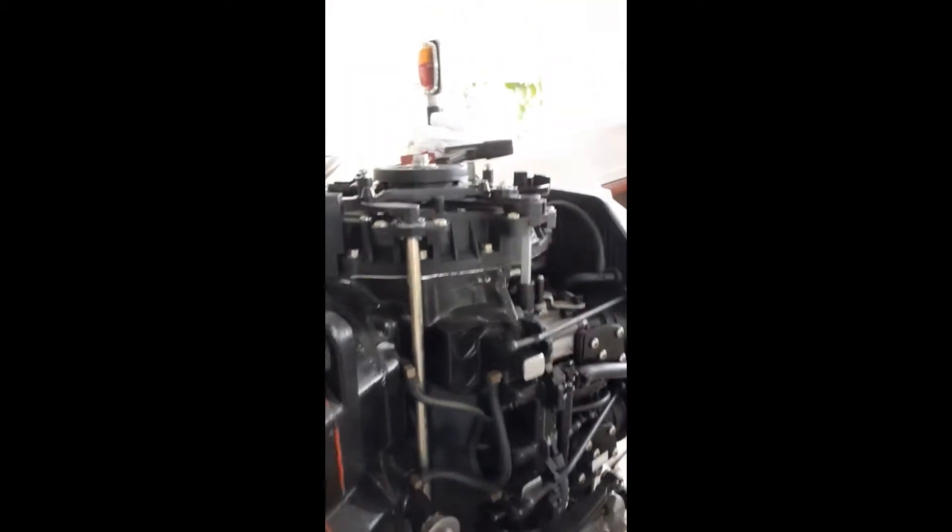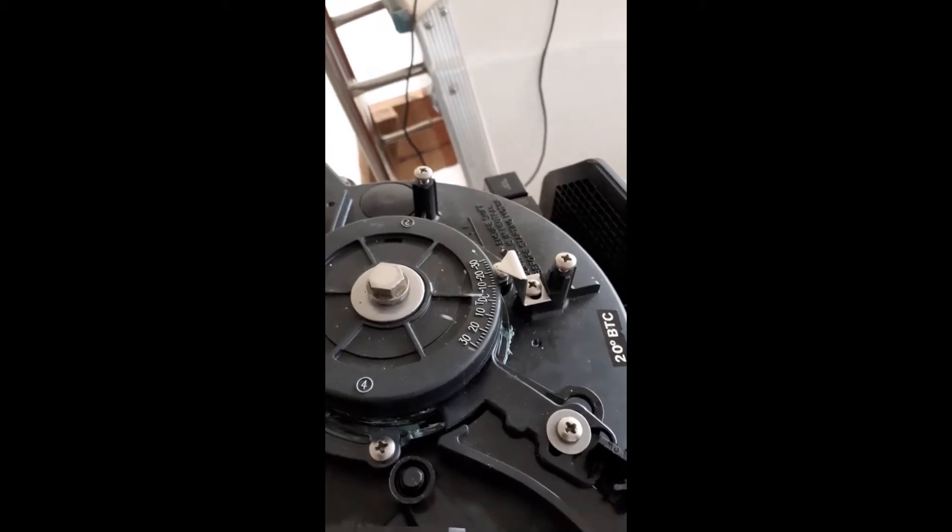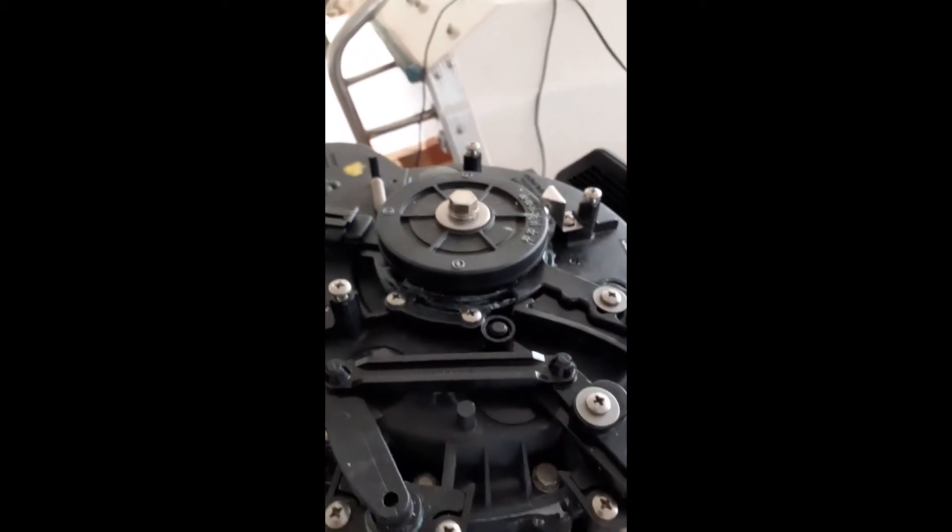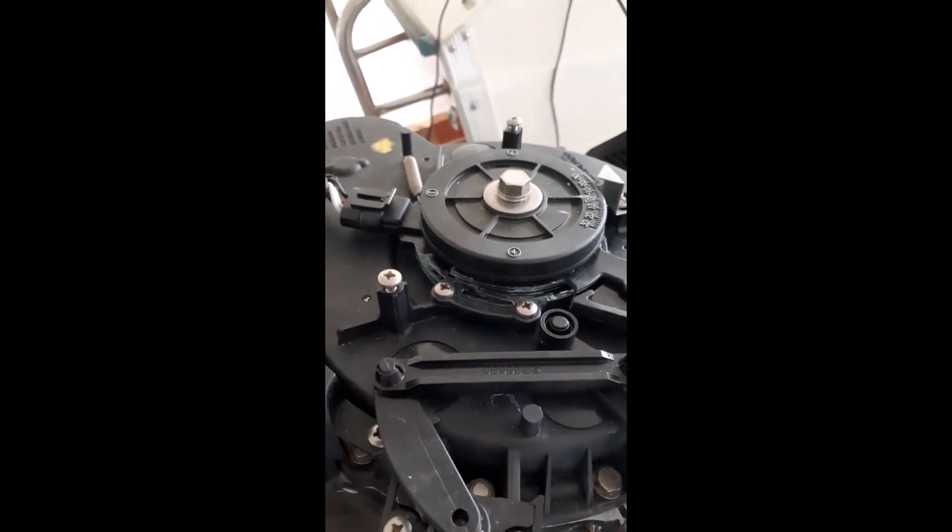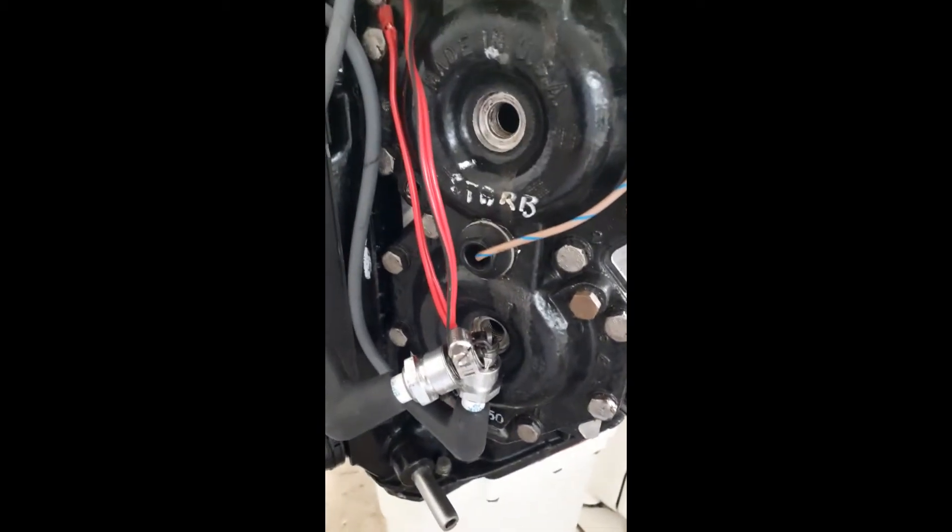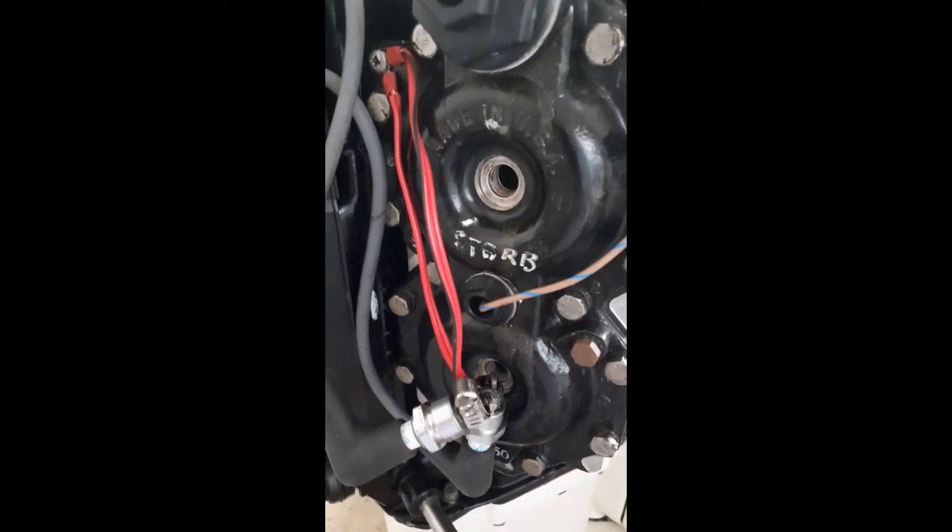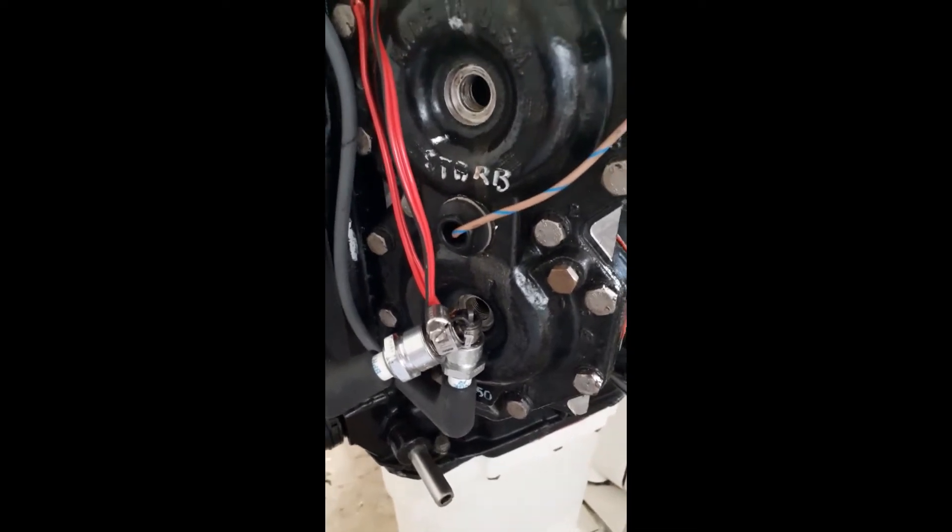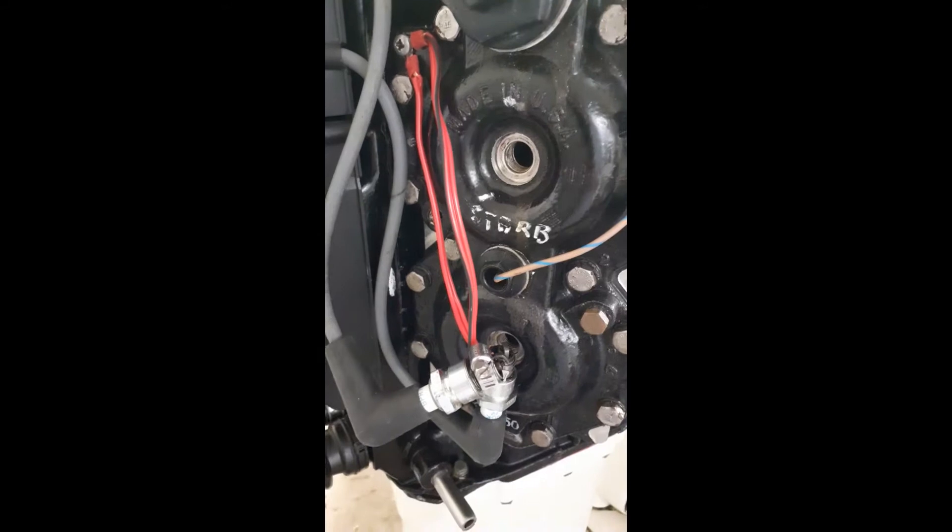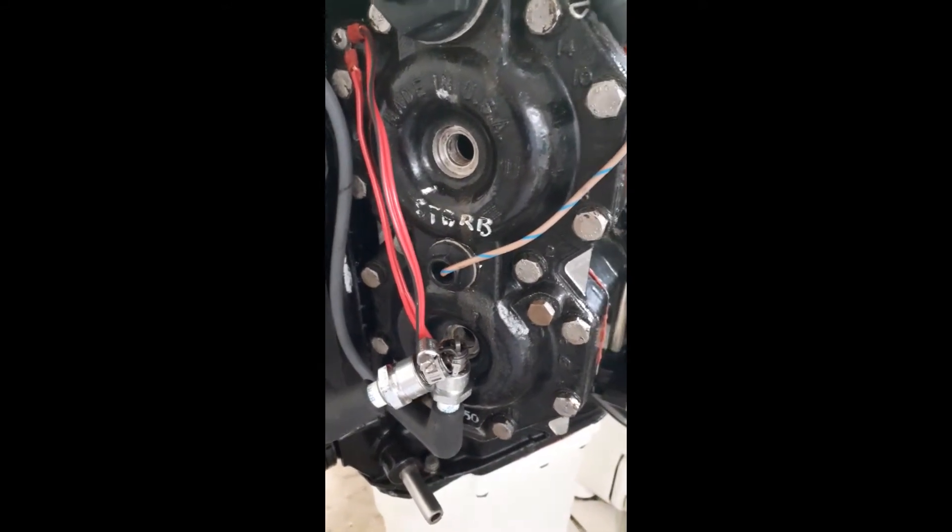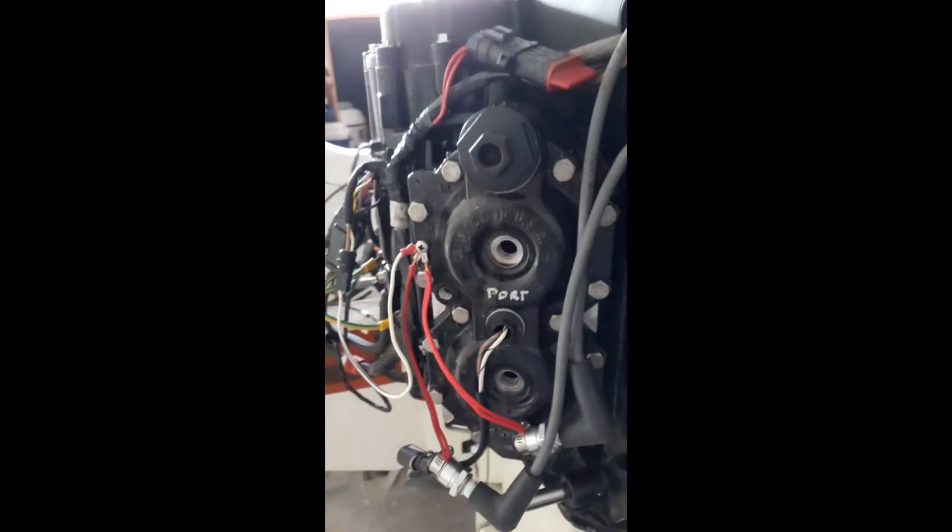Once you're happy that the indicator is sitting at top dead center, you can start to set up the electrical part for adjusting the timing. The first thing I did was create these rather tasteful spark plug testers. They're just wires connecting to a ground, using some old spark plugs left over from the rebuild.